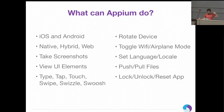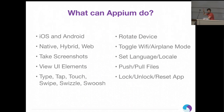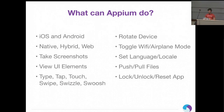It can take screenshots, view UI elements, type, tap, touch. You can rotate the device, toggle Wi-Fi and airplane mode, set the language and locale, push and pull files, lock and unlock the device, and reset the app. All these things work on Android and iOS. Sometimes it's a little platform-specific — it's way easier to put photos on Android than iOS. But you use the one Appium driver API to do all this.